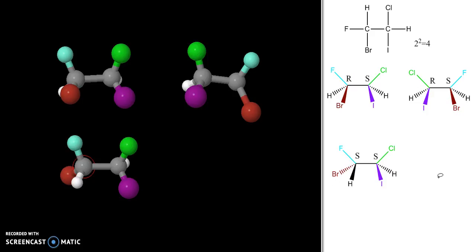Finally, to draw the last stereoisomer, I just draw the mirror image of this third one. Since this was SS, my new mirror image is RR. And I can do that in the three-dimensional models also.